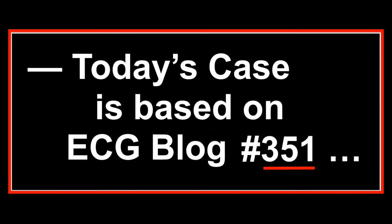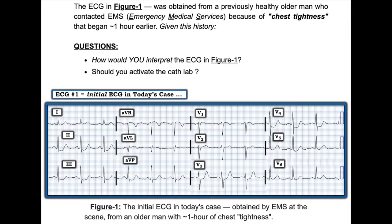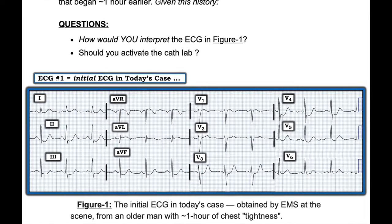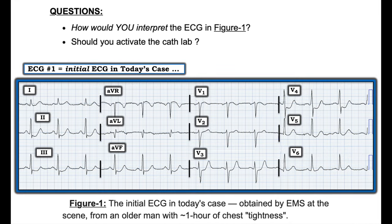The ECG in the figure was obtained from a previously healthy older man who contacted emergency medical services because of chest tightness that began one hour earlier. So given this history, how would you interpret the ECG? Should you activate the catheterization lab?